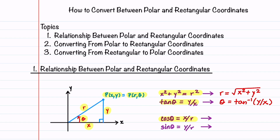Cosine theta equals the adjacent side divided by the hypotenuse, so it's equal to x over r. If we solve this equation for x, we get x = r·cos(theta). Similarly, sine theta equals the opposite side divided by the hypotenuse, so it's equal to y over r. If we solve this equation for y, we get y = r·sin(theta). These are the two equations we use to convert a point from polar to rectangular coordinates, and r = √(x² + y²) and theta = arctan(y/x) are the two equations we use to convert from rectangular to polar coordinates.